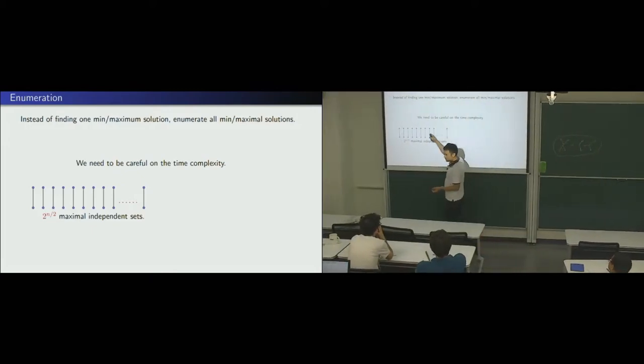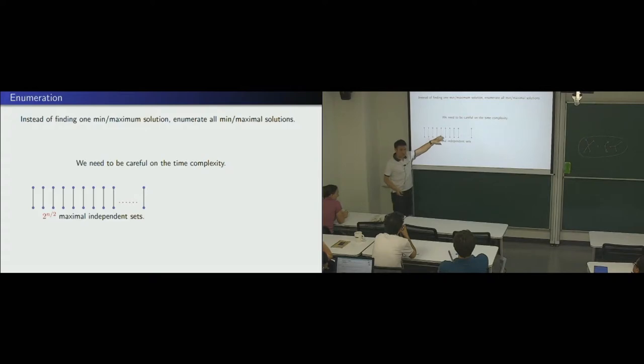But this time we need to be careful about the running time of such an algorithm. For example, this is a simple graph. Very simple, right? Each component is just an edge. So this graph has this number of independent sets. 2 to the power of n over 2. That's very clear, right? So if you want to study enumerating the maximum independent set, it has to be, it cannot be smaller than this.